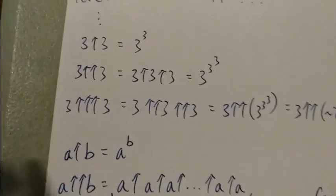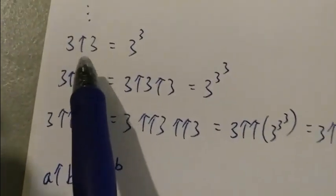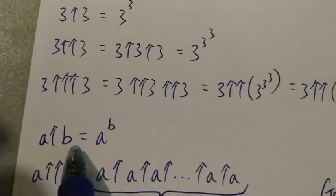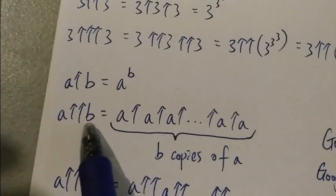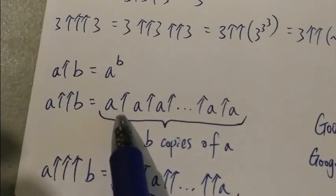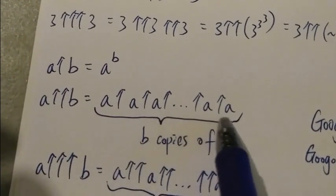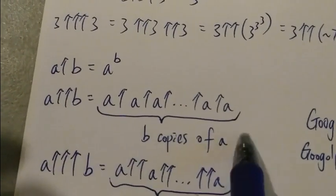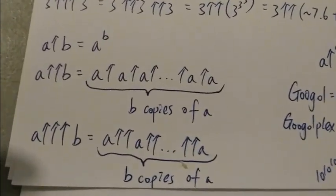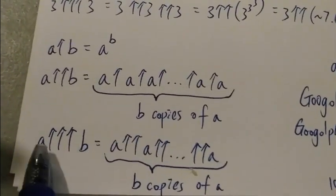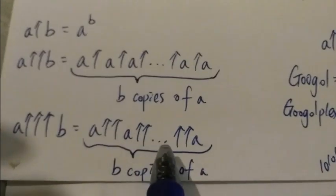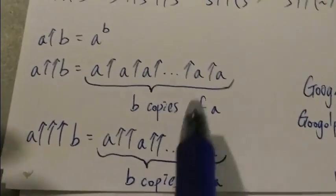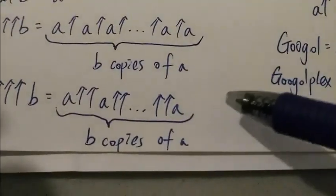Another way to look at the up arrow notation is that for A up arrow B, it just means A to the power of B. And then for A double arrow B, it means A arrow A arrow A with B copies of A. And then for 3 arrows, A triple arrow B, it just means A double arrow A double arrow with B copies of A.